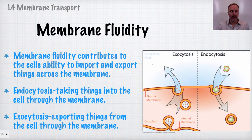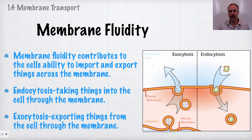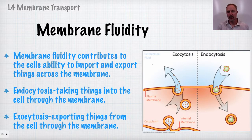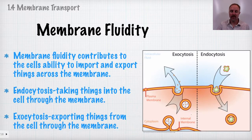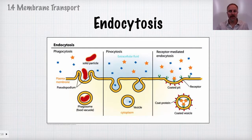Regarding membrane fluidity: as discussed with the fluid mosaic model, the membrane is always moving — it's not a rigid static structure. One useful feature of this fluidity is that we can bring things into the cell or remove things from the cell through endocytosis or exocytosis. Endocytosis brings substances in, exocytosis releases them out, and in both cases vesicles are used to move substances within the cell.